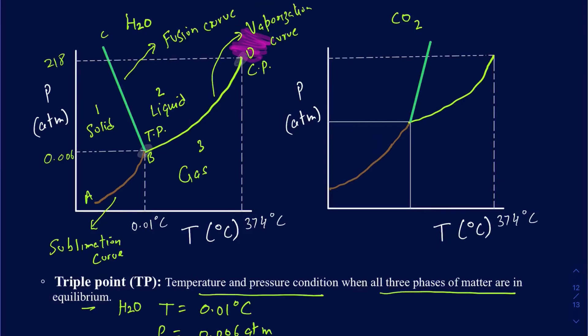For the CO₂ phase diagram, labeled similarly with points A, B, C, and D, there are still three regions: solid, gas, and liquid. However, there is a big difference — the fusion curve B-C is not very large in this case, whereas it was fairly large for water. The sublimation curve A-B is fairly large, because carbon dioxide existing in liquid form is rare.